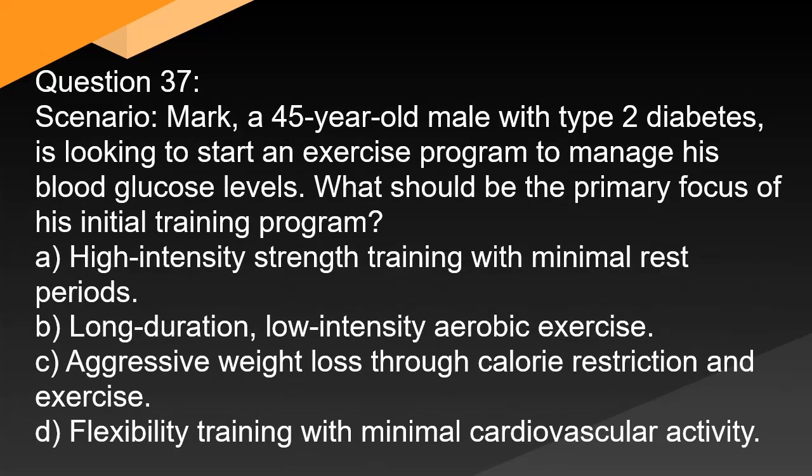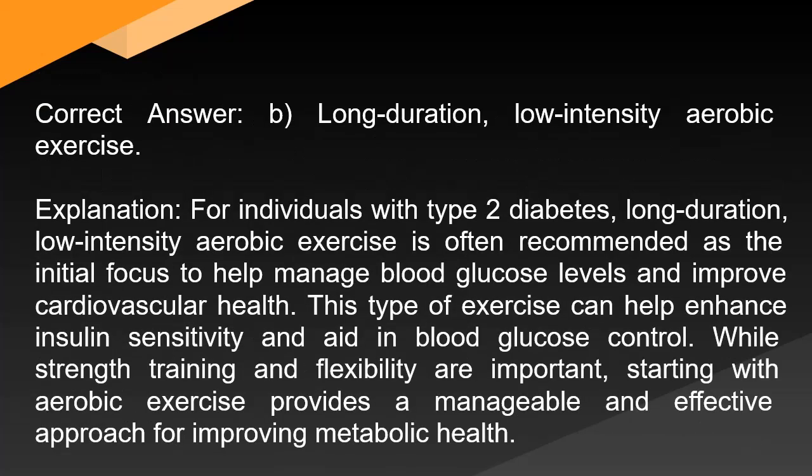Question 37 — Scenario: Mark, a 45-year-old male with type 2 diabetes, is looking to start an exercise program to manage his blood glucose levels. What should be the primary focus of his initial training program? A. High-intensity strength training with minimal rest periods. B. Long-duration, low-intensity aerobic exercise. C. Aggressive weight loss through calorie restriction and exercise. D. Flexibility training with minimal cardiovascular activity. Correct answer: B. For individuals with type 2 diabetes, long-duration, low-intensity aerobic exercise is recommended as the initial focus to help manage blood glucose levels and improve cardiovascular health. This type of exercise enhances insulin sensitivity and aids in blood glucose control. While strength training and flexibility are important, starting with aerobic exercise provides a manageable and effective approach for improving metabolic health.